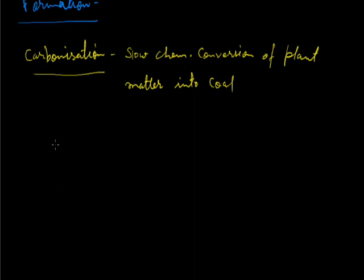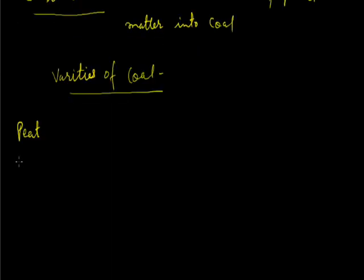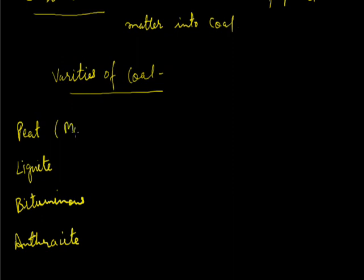It is actually slow chemical conversion of plant matter into coal. Now coal occurs in following four varieties. The first variety is peat, second is lignite, third is bituminous, and the fourth is anthracite. Peat is most inferior quality of coal, that is it contains least percentage of carbon, and anthracite is most superior quality of coal, that is it contains maximum percentage of carbon.